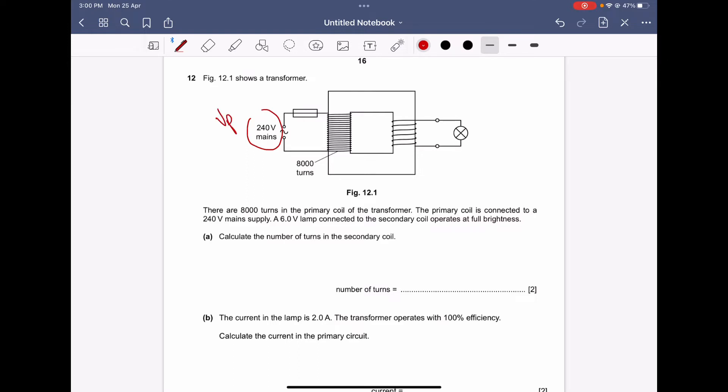Np, which is the number of turns, is 8000 turns in the primary coil of the transformer. The primary coil is connected to 240V, as I said - the Vp, that's the voltage across the primary coil.